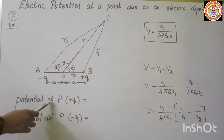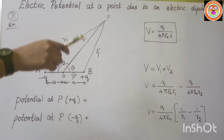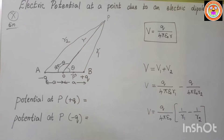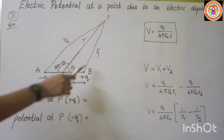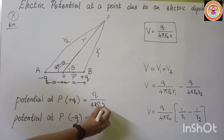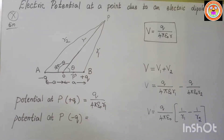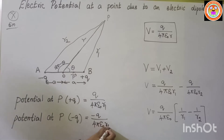The potential at point P due to the positive charge is V1 = q / (4πε₀ r1). The potential at point P due to the negative charge is V2 = −q / (4πε₀ r2), since potential is a scalar quantity and the charge here is minus q.